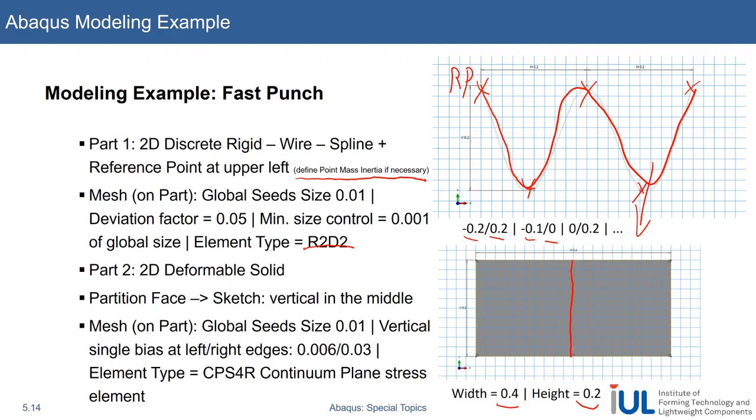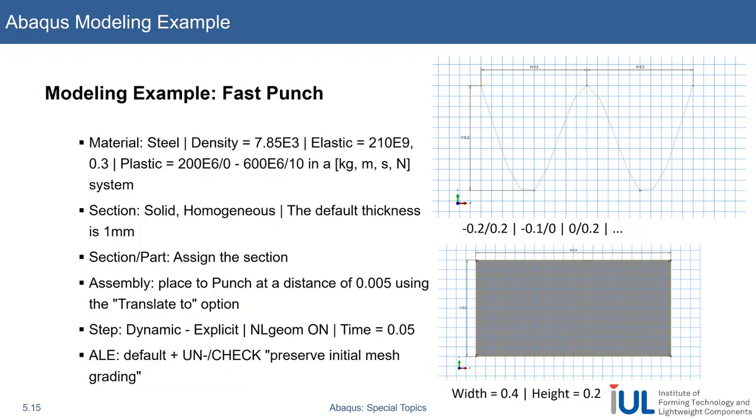CPS4R, so we'll check for a continuum plane stress, and that's also the reason why we define a solid homogeneous. So it's not a shell. I know it's 2D, but remember when we talked about continuum elements, it's a solid continuum body that is depicted by a 2D representation under certain assumptions.